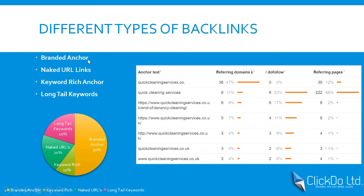The second type is the naked URL link. Naked URL means giving the backlink in the form of a direct website URL — for example, quickcleaningservices.co.uk. You are linking with the exact URL to the target page, whether it's a money page, homepage, or blog page. If you deal with naked URLs you are always in the safe zone with respect to SEO.